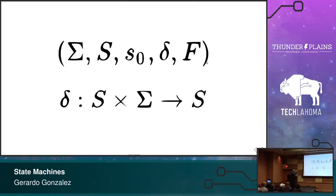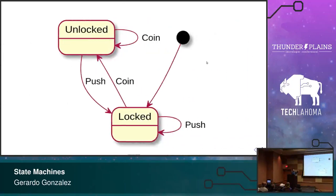So — state machines. This is what really caught my attention when I was first introduced to them: the simplicity of these models. A state machine contains states. The canonical example is known as the turnstile state machine. If you don't know what a turnstile is — at the metro station there's that bar that won't let you in, and when you pay, the bar can be pushed, you get through, and then it locks again. That's a turnstile.